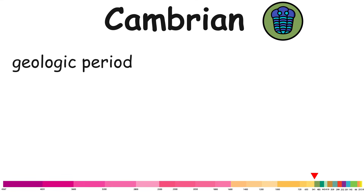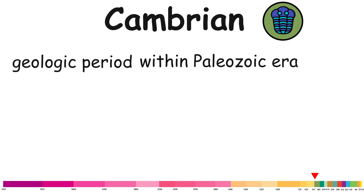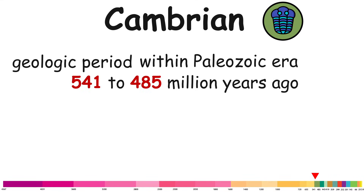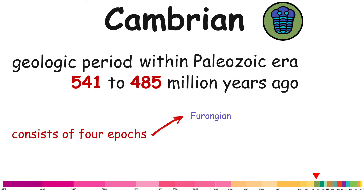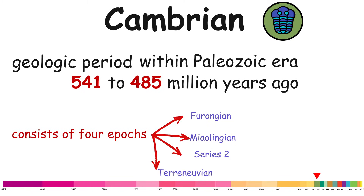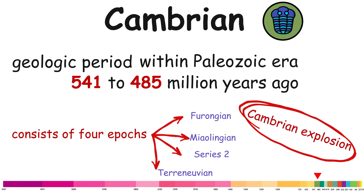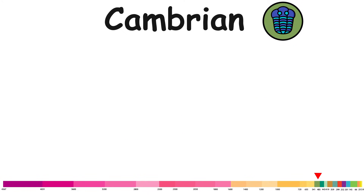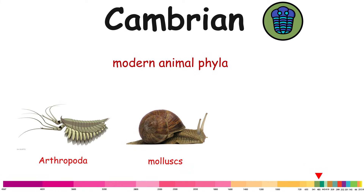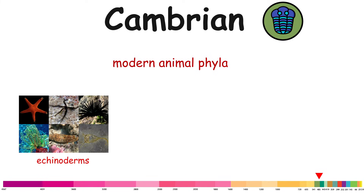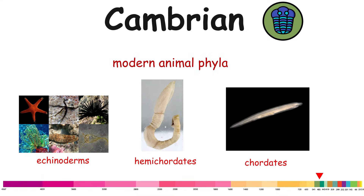Cambrian. The Cambrian is a geologic period within the Paleozoic era, spanning approximately from 541 to 485 million years ago. It consists of four epochs: Furongian, Miaolingian, Series 2, and Terreneuvian. The rapid diversification of life forms known as the Cambrian Explosion produced the first representatives of most modern animal phyla, including Arthropoda, Mollusks, Annelids, Echinoderms, Hemichordates, and Chordates.